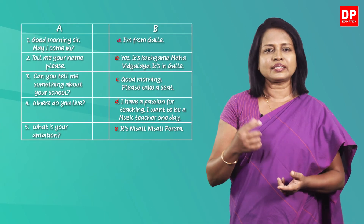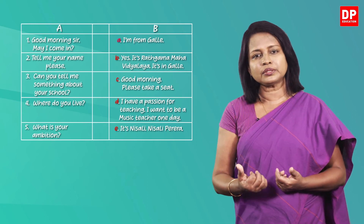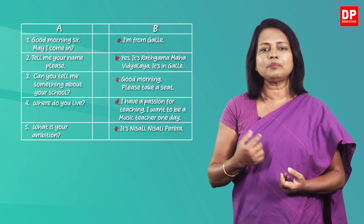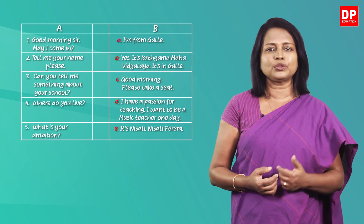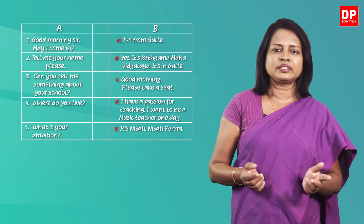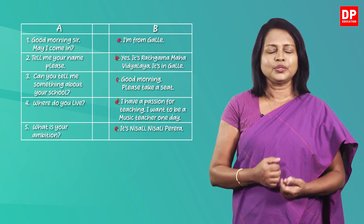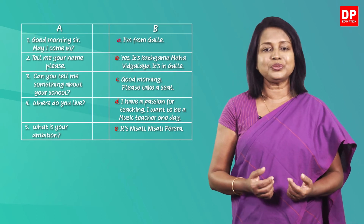Okay children, now let's do another activity. In this activity too, an examiner is testing a student for his English language proficiency. You can see the utterances of the examiner in column A and the responses of the student in column B. What you have to do is match the utterances with the relevant responses. Write the correct letter of the answer in the box given. You can pause the video and do it now.